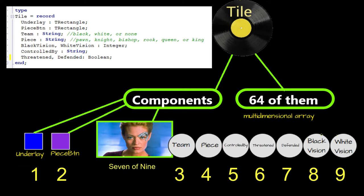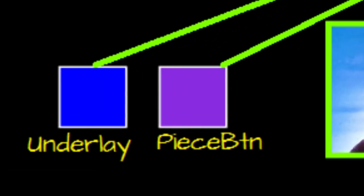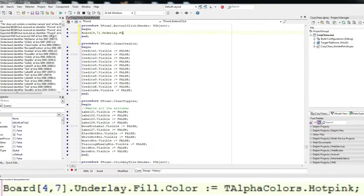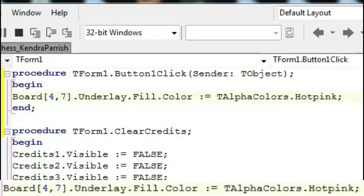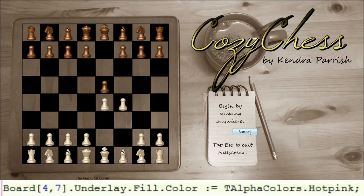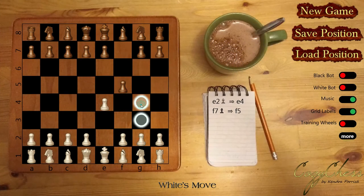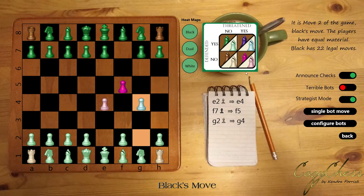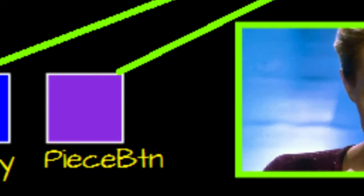Underlay is the rectangle that holds the background color. If I add a button to Cozy Chess that when you click it runs this code, what do you think will happen? Let's see. It turns the background of the tile in the fourth row, seventh column, hot pink. In my actual game, the fill color of all the underlays is usually set to black or transparent to let the wood grain of the background photo shine through, but the two tiles involved in the most recent move are set to sandy brown. A fun exception are the heat maps feature in strategy mode.